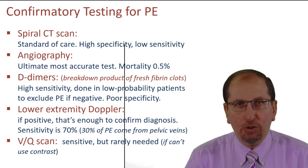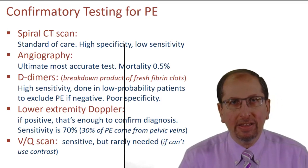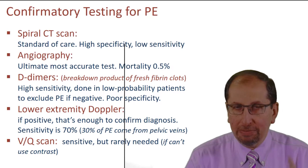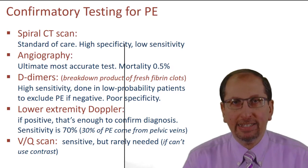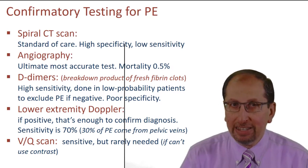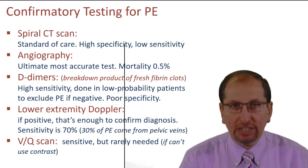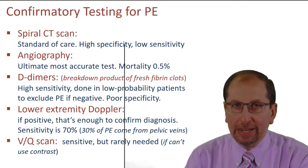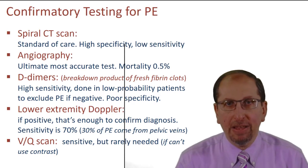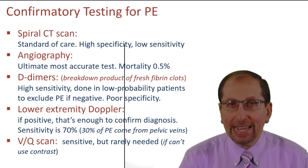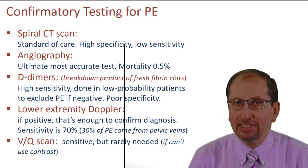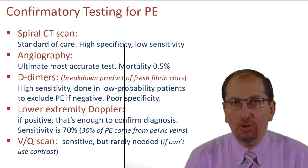For confirmatory testing, the standard of care to diagnose pulmonary embolism is spiral CT scan. It has high specificity — meaning if it is positive, you can diagnose pulmonary embolism. But if it is negative, you cannot exclude pulmonary embolism. It has high specificity but low sensitivity.